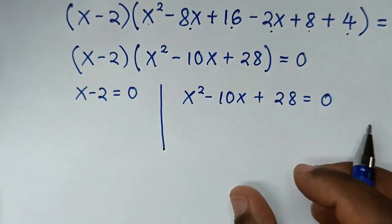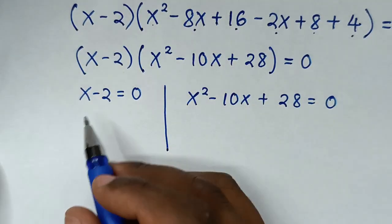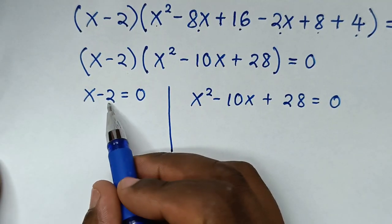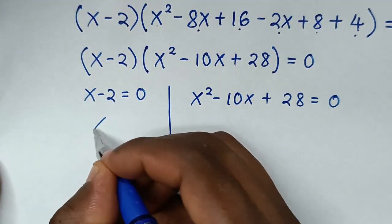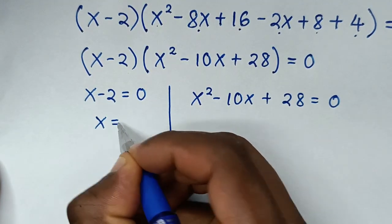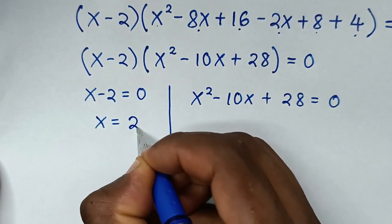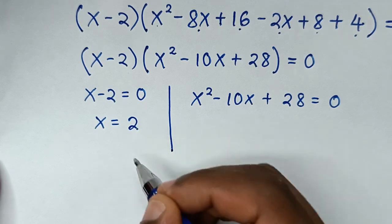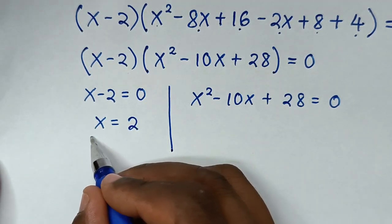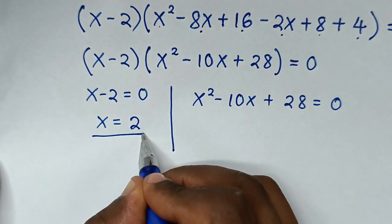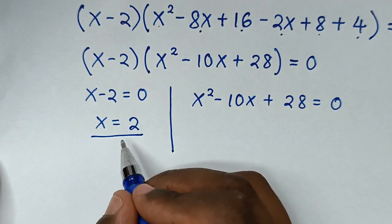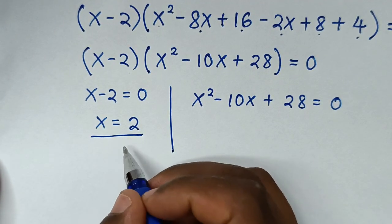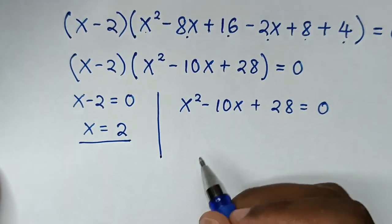From the first solution, taking -2 to the other side gives x = 2. This is the first value of x, which is the real solution.